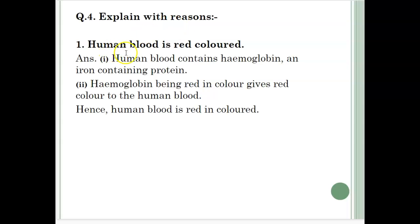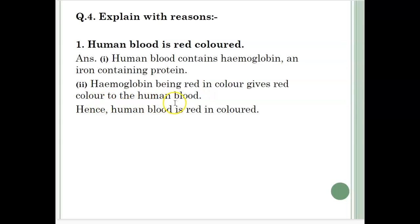Explain with reasons: human blood is red colored. Human blood contains hemoglobin, an iron-containing protein. Hemoglobin being red in color gives red color to the human blood. Hence, human blood is red in color.